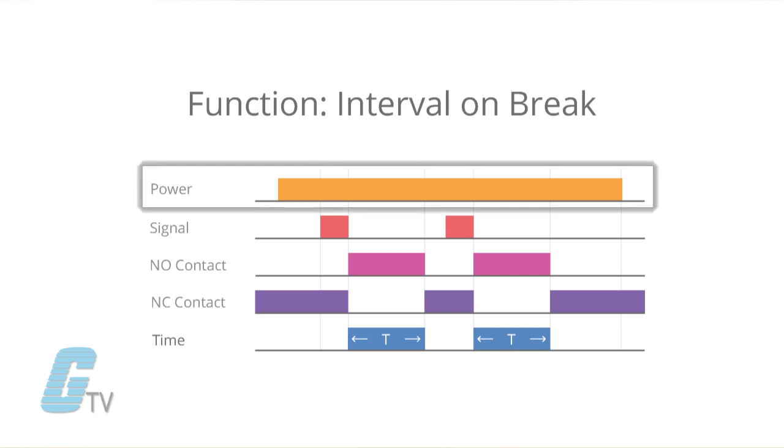On most diagrams, the top line indicates the power applied. This could be indicated by the letter P, V, the word power, or a different symbol.